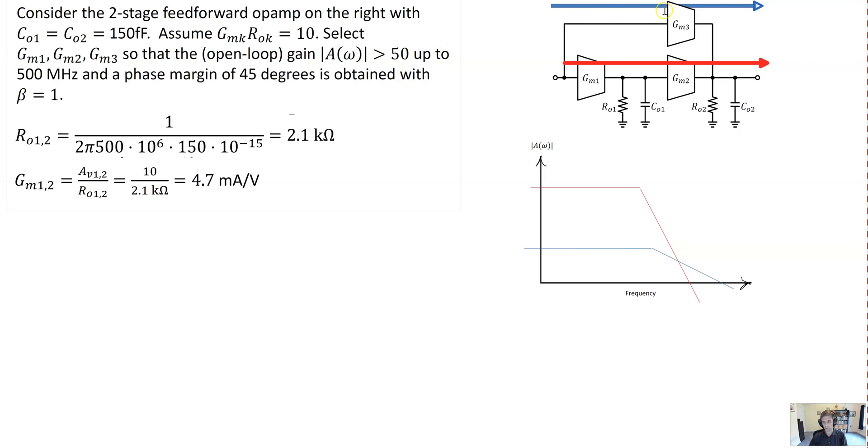Next we've got to introduce the feedforward compensation transconductor GM3. We've got to choose the right value for GM3 to ensure 45 degrees of phase margin. So if we assume that the two low-frequency poles here are going to give rise to about 180 degrees phase shift, then we need the lead compensating zero introduced by GM3 to give us a plus 45 degrees phase lead. And that'll give us the required 45 degrees phase margin.